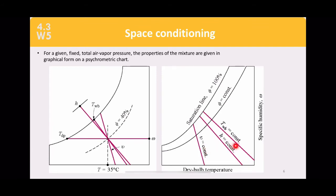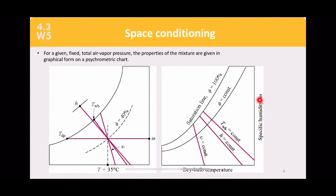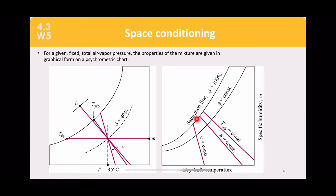The lines involved in the psychrometric chart include: specific humidity omega (in kilograms of vapor per kilogram of dry air), specific volume constant lines, enthalpy constant lines, wet bulb temperature lines, and the saturation line where humidity reaches 100%. Dry bulb temperatures are shown along the bottom.